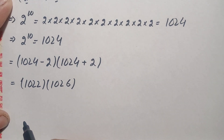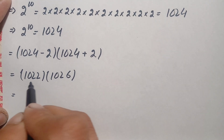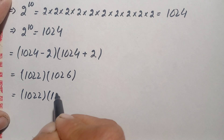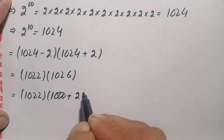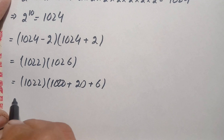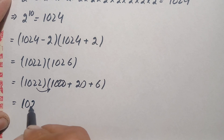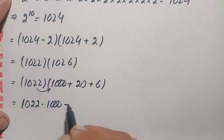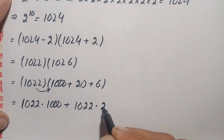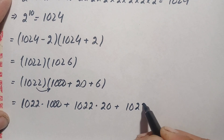Now we will multiply these two numbers without using a calculator. We will use a trick: keep 1022 as it is, and split 1026 as the sum of 1000 plus 20 plus 6. Now we will multiply 1022 with each of these three numbers: 1022 times 1000, plus 1022 times 20, plus 1022 times 6.